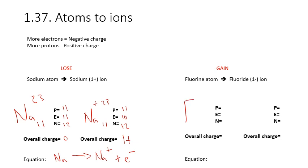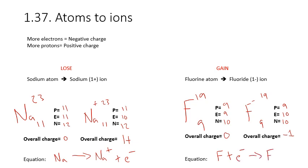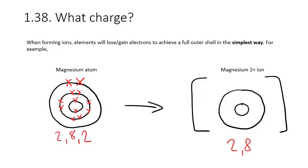Fluorine on the periodic table is F-19. It has 9 protons, 9 electrons, and 10 neutrons when it's an atom. Its overall charge, since it has 9 protons and 9 electrons, is 0. The fluorine minus ion, known as the fluoride ion, is also F-19 and has 9 protons, 10 neutrons, but has gained an electron, so now it has 10 electrons. We have 10 negatives and 9 positives, which gives an overall charge of minus 1. The equation is: F + e⁻ → F⁻. So some atoms gain electrons, some lose electrons, and they form ions.